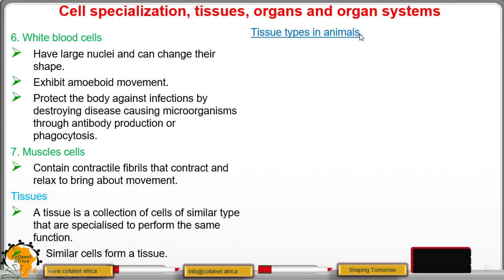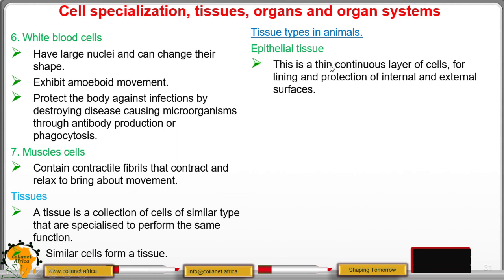What are the tissue types in animals? We have epithelial tissue and it is a thin continuous layer of cells for lining and protection of internal and external surfaces. So this epithelial tissue is found on the surfaces of parts like the lungs and even the mouth. There is a thin layer covering the cells.